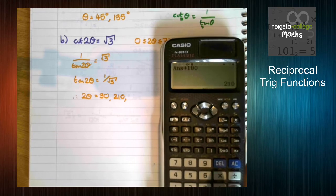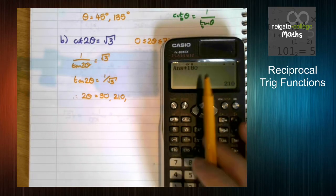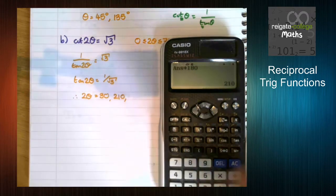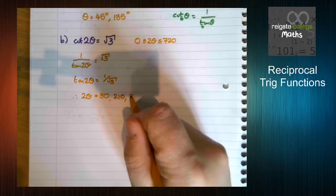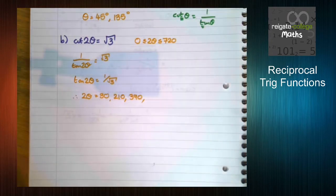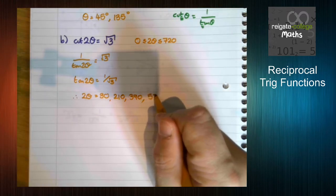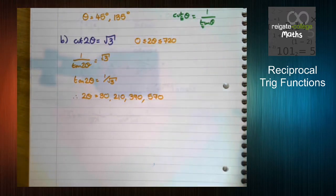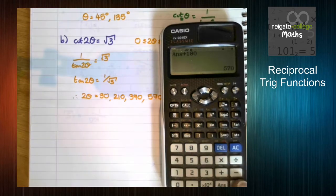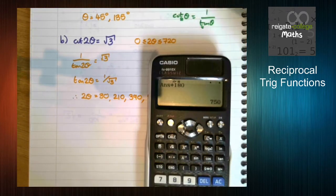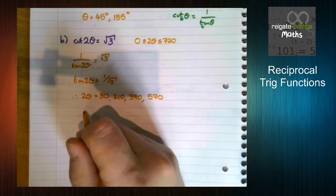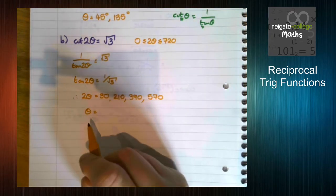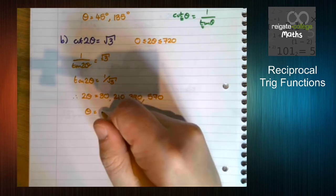Remember, tan is unique in that we can just keep adding 180 to find subsequent values. So our next one is 390, and the fourth is 570. We can see if we go any further, we get 750, which is outside of this interval, so we don't want to include it. All that we now need to do is divide all the answers by 2.